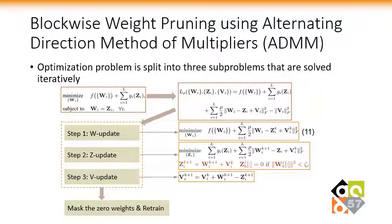The weight pruning problem is considered as an optimization problem which can be solved by ADMM. The whole problem is split into 3 sub-problems that are solved iteratively. For each weight matrix W_i for the i-th convolutional layer, two additional variables Z_i and V_i are introduced. The first step is updating W through stochastic gradient descent. The second step is updating the weight blocks in Z and setting the values of unimportant weight blocks to 0. The importance of weight blocks is measured by their L2 norm, and weight blocks with L2 norm less than a threshold value will be pruned. The third step is updating the variable V.